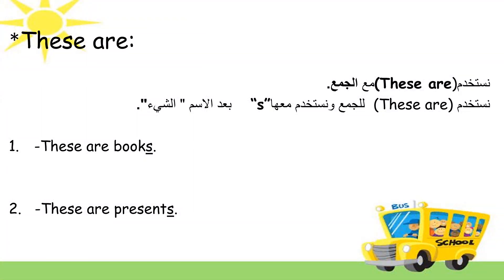Now we want to explain the use of 'these are.' We use 'these are' with the plural. Sentence number one: 'These are books.' Look at the word 'books' — we add 's' because it is plural, and we use 'these are' with the plural. Sentence number two: 'These are presents.' We also add the letter 's' after 'present' because it is plural.